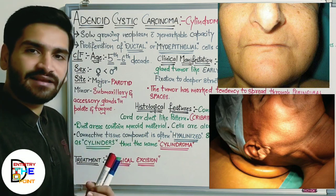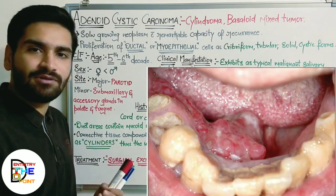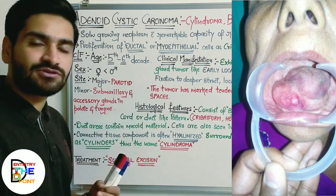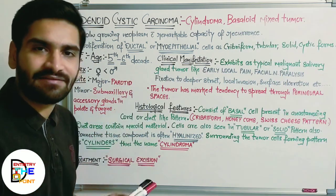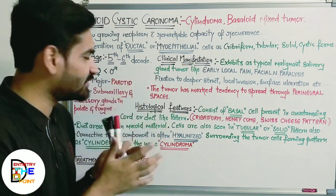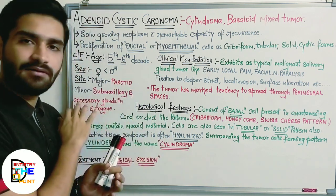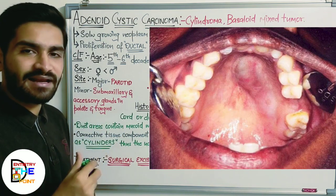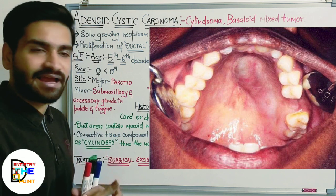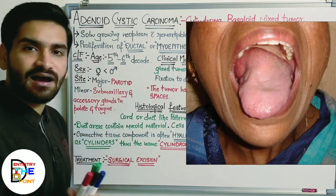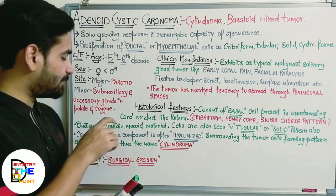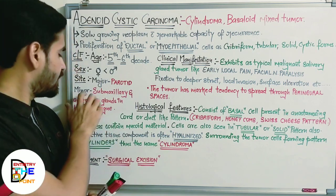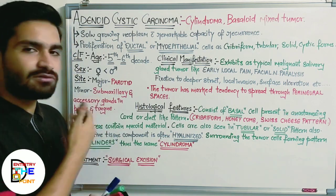The most common site is the parotid gland. Some tumors are also seen in relation to the submandibular or sublingual gland, but when it comes to the most common major salivary gland affected, it is the parotid gland. For minor salivary glands, the submaxillary glands or glands in the lips, palate, or tongue are most commonly affected — with the palate being the most commonly affected site among minor salivary glands.